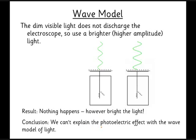So what this tells us is we can't explain the photoelectric effect with a wave model of light. And this was a fairly well known experiment at the end of the 19th century. But Einstein was the person who managed to explain why this happens.